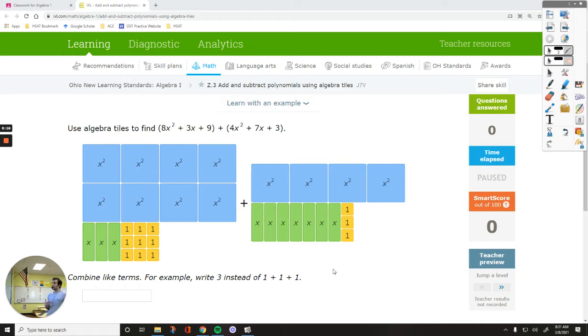In the first question it says use algebra tiles to find 8x² + 3x + 9 added to 4x² + 7x + 3. Basically this is to give you the basics of adding and subtracting algebraic expressions using visuals. So what we do is count the number of similar or like items we have and then combine them together.